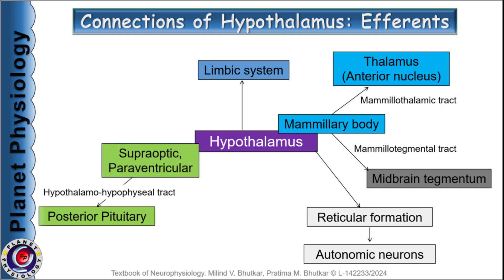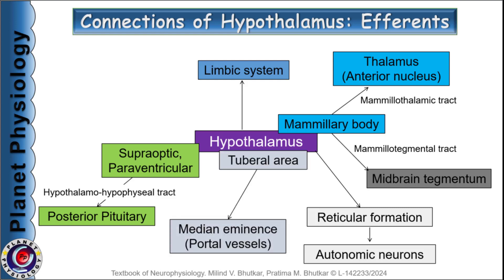Fibres arising from the supraoptic and paraventricular nuclei terminate in the posterior pituitary and form the hypothalamo-hypophysial tract, releasing neurohormones vasopressin and oxytocin. Efferents from the tuberal area, especially from the arcuate nucleus, terminate in the median eminence and secrete several releasing and inhibitory hormones to regulate anterior pituitary secretions via the hypothalamo-hypophysial portal system.